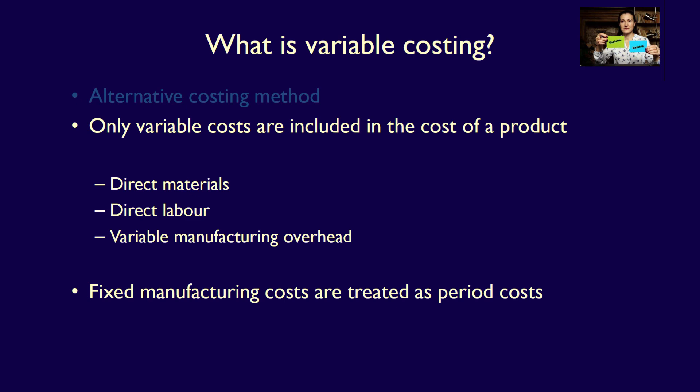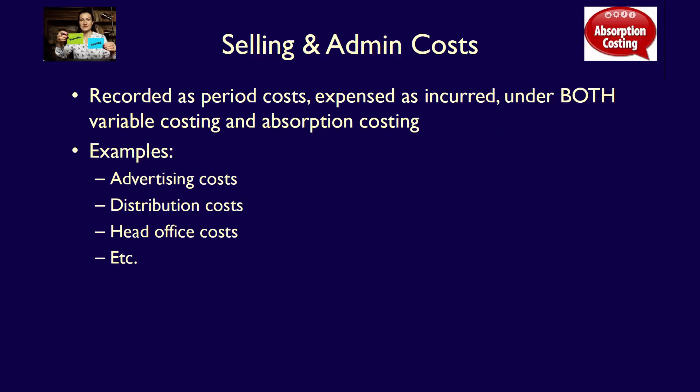All the fixed manufacturing overhead costs are treated as period costs, expensed immediately as they are incurred. It should be noted that under both absorption and variable costing, standard period costs associated with selling and administration continue to be treated as period costs, expensed immediately as they are incurred.